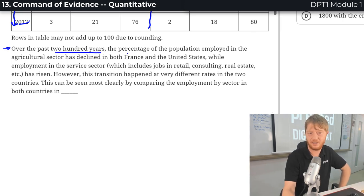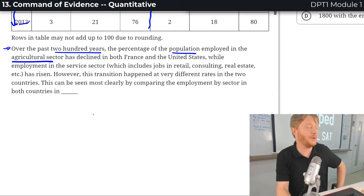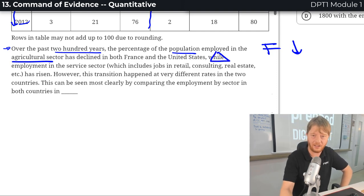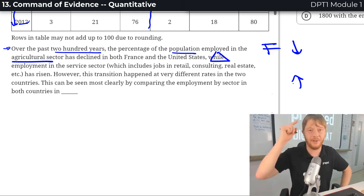Over the past 200 years, the percentage of the population employed in the agricultural sector, which is farming, has declined. So farming is down in France and the United States. While, so this is a pivot, something is up. Prediction, very important.